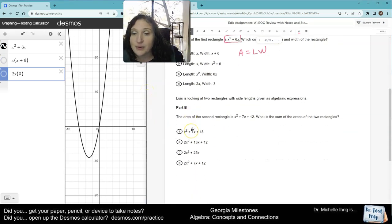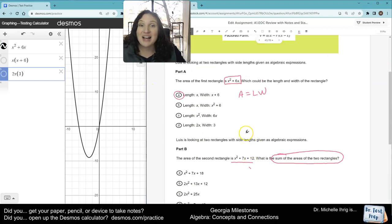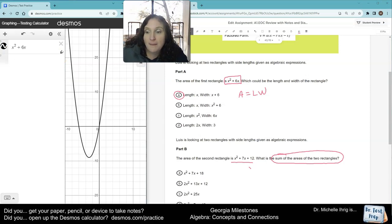So then it says Luis is looking at two rectangles with the same side lengths. The area of the second rectangle is this. What is the sum of the areas of the two rectangles? So they're trying to be kind of funny with you, but it's actually super easy. Because it wants the sum, sum means add. So all we're going to do is we're going to take this - this is our first rectangle area, this is our second rectangle area - and we're just going to add them up.